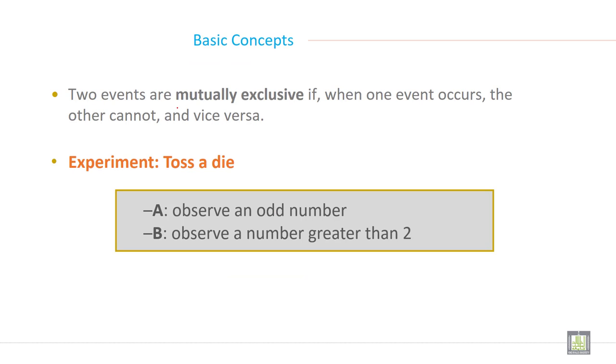Now two events are mutually exclusive if when one event occurs the other cannot and vice versa. Experiment like toss a die: observe an odd number and observe a number greater than 2.